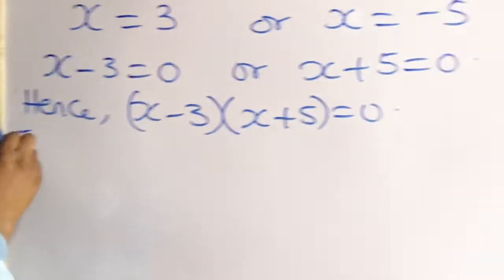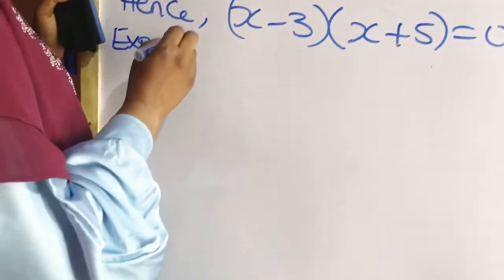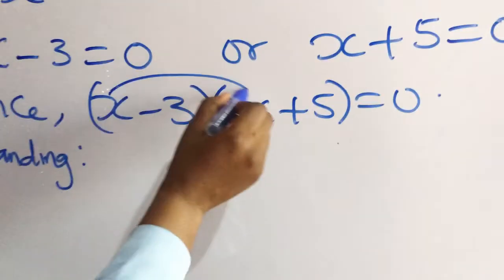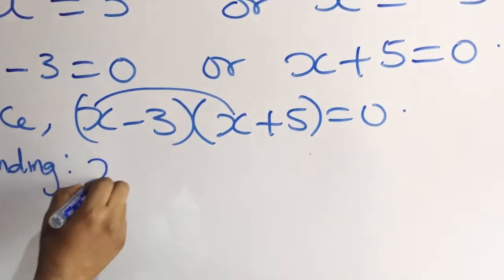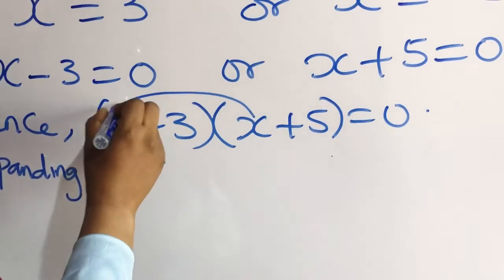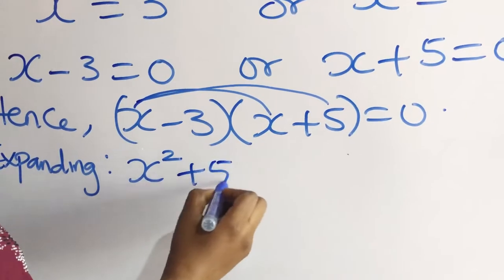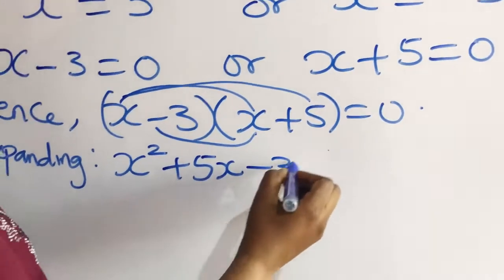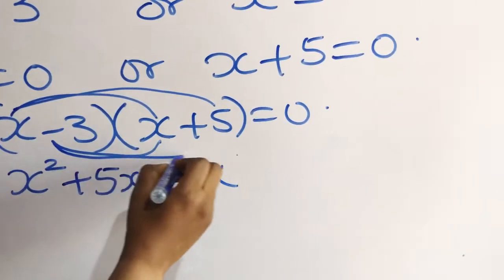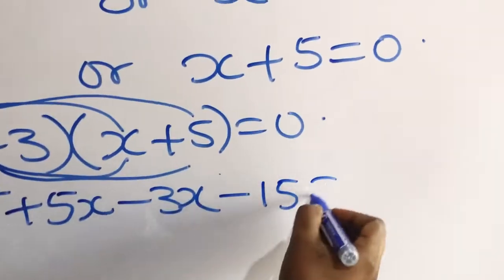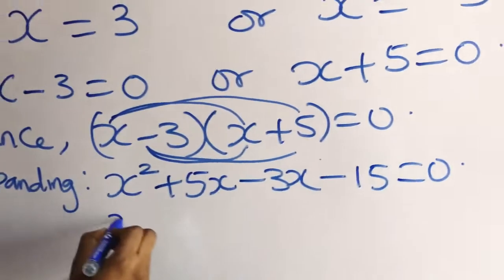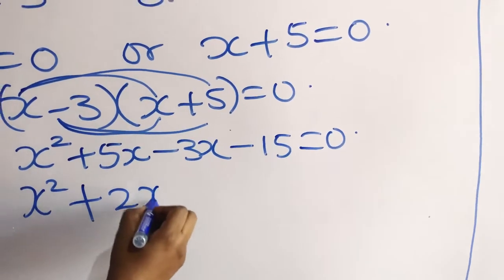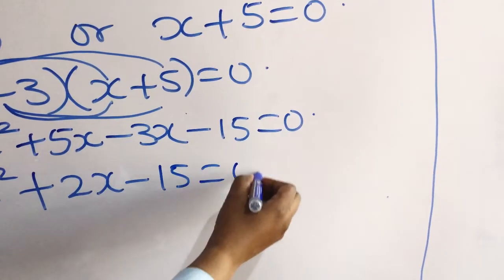Expanding: x multiplied by x is equal to x squared. x multiplied by plus 5 gives plus 5x; minus 3 multiplied by x gives minus 3x; minus 3 multiplied by 5 gives minus 15. So we have x squared plus 5x minus 3x minus 15 is equal to 0.